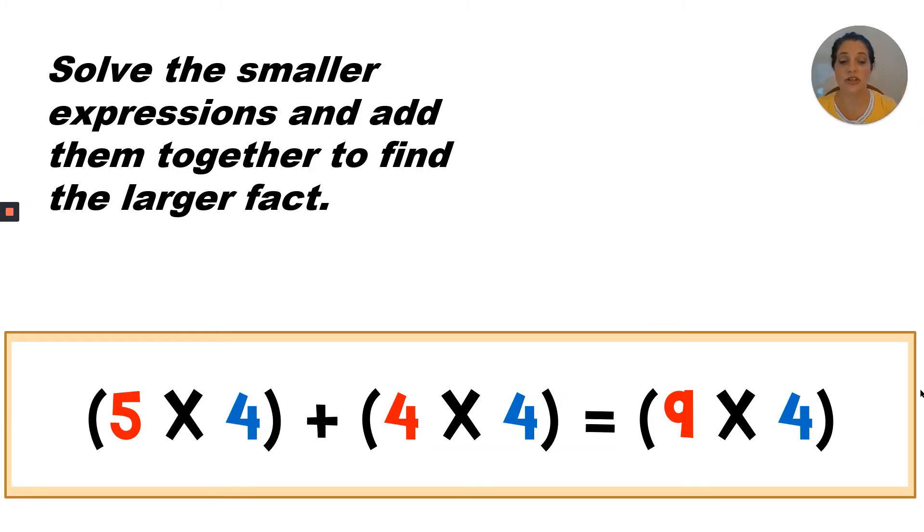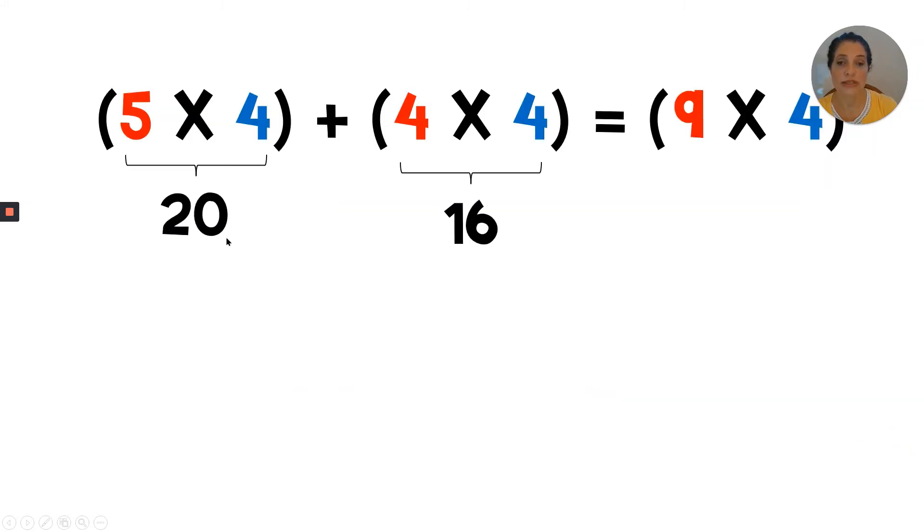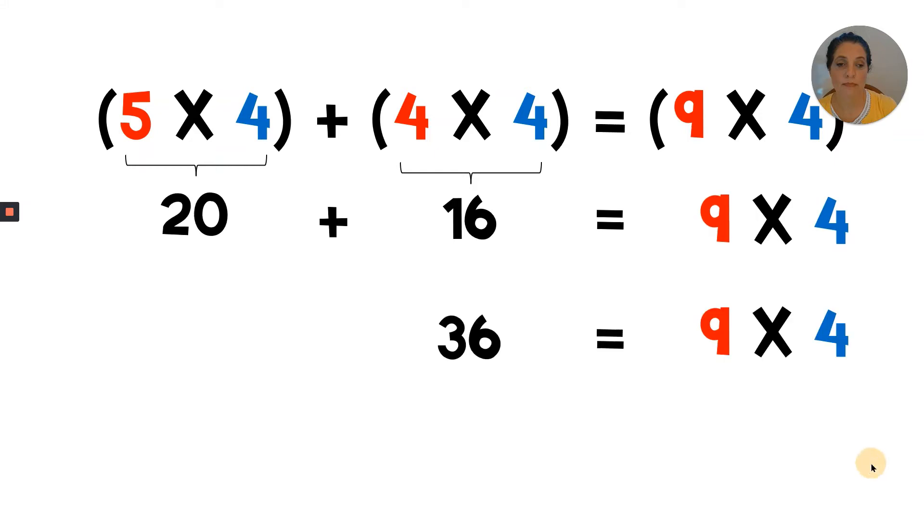So if we add together twenty plus sixteen, that would be the product of nine times four. Twenty plus sixteen equals nine times four. Yes, twenty plus sixteen is equal to thirty-six. So we now know that nine times four is thirty-six.